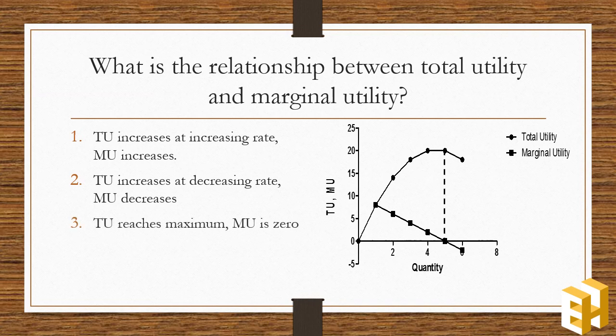When total utility reaches maximum, at the point of saturation, marginal utility then is zero. Finally, when total utility starts falling, marginal utility becomes negative.